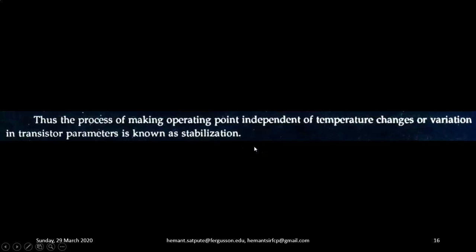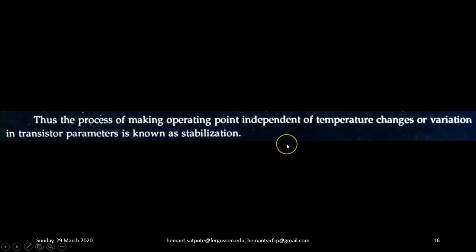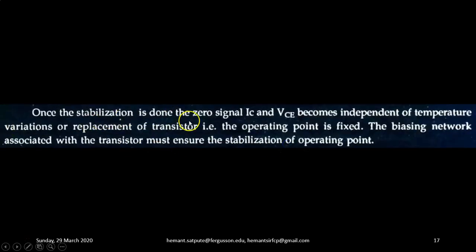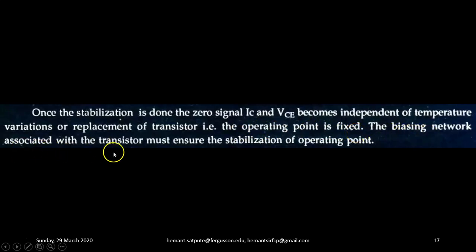Please remember this definition. The process of making the operating point independent of temperature changes or variation in transistor parameters is known as stabilization. Once stabilization is done, the zero signal collector current IC and collector to emitter voltage VCE become independent of temperature variations or replacement of transistor — that is, the operating point remains fixed. So, the biasing network associated with the transistor must ensure stabilization of the operating point.